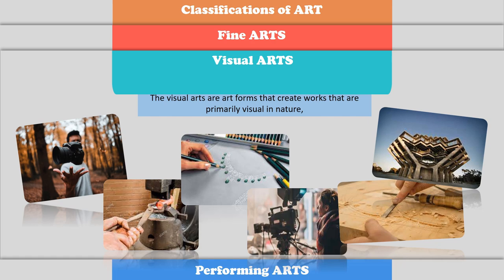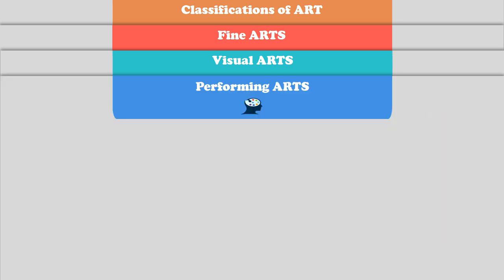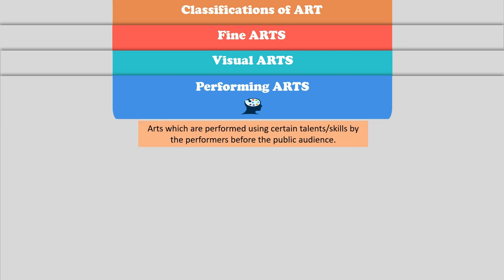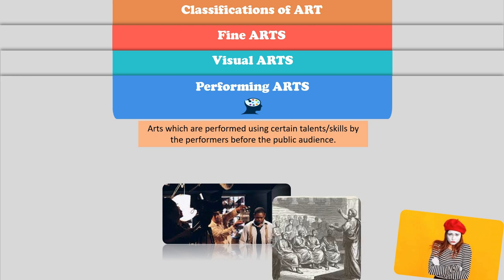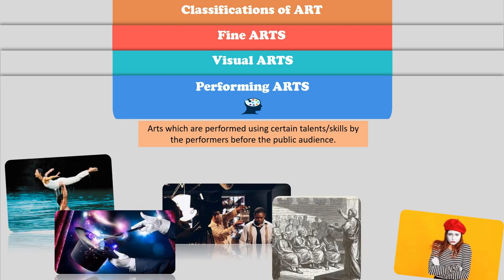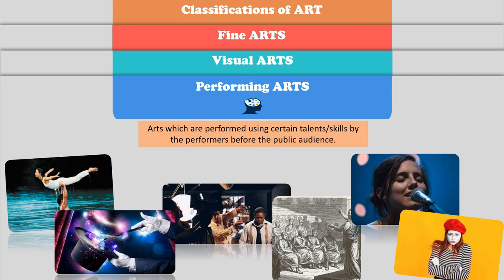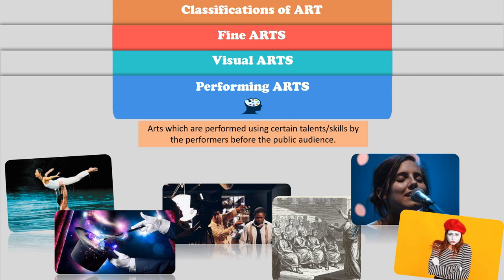Performing arts are arts which are performed using certain talent and skills by the performers before a public audience. Some examples are acting, magic, opera, dancing, and singing. If you are doing some of these performances, you must be called a performer and not an artist. Before we end this video, let's have a review.